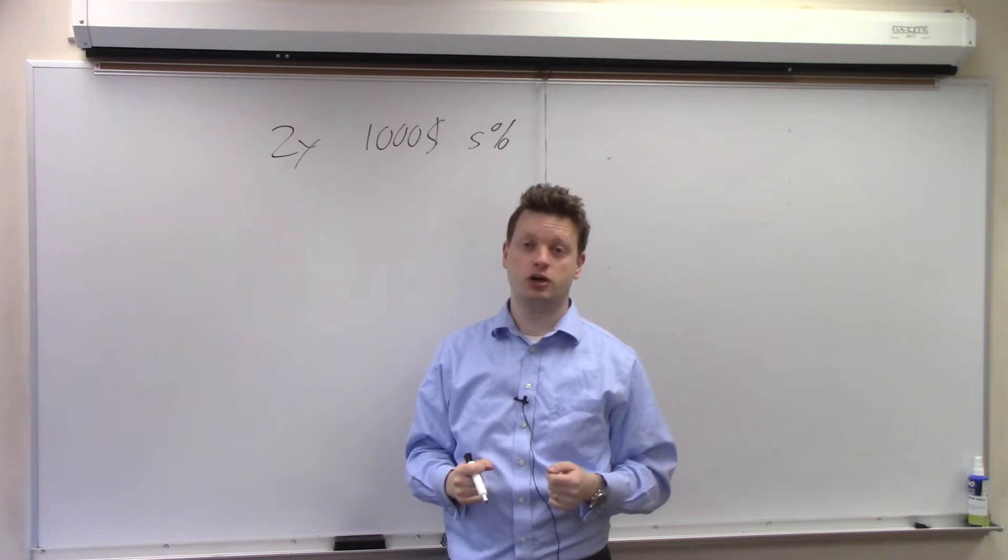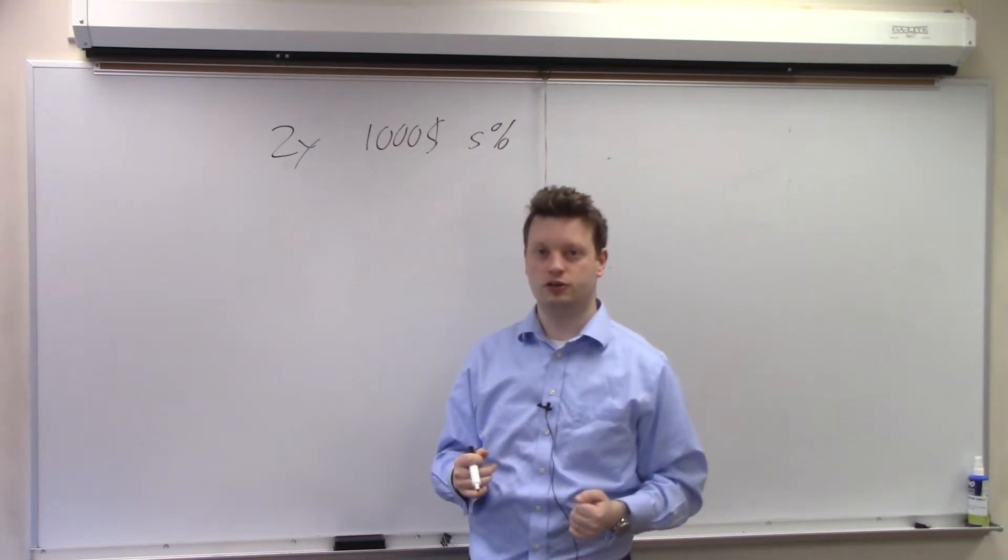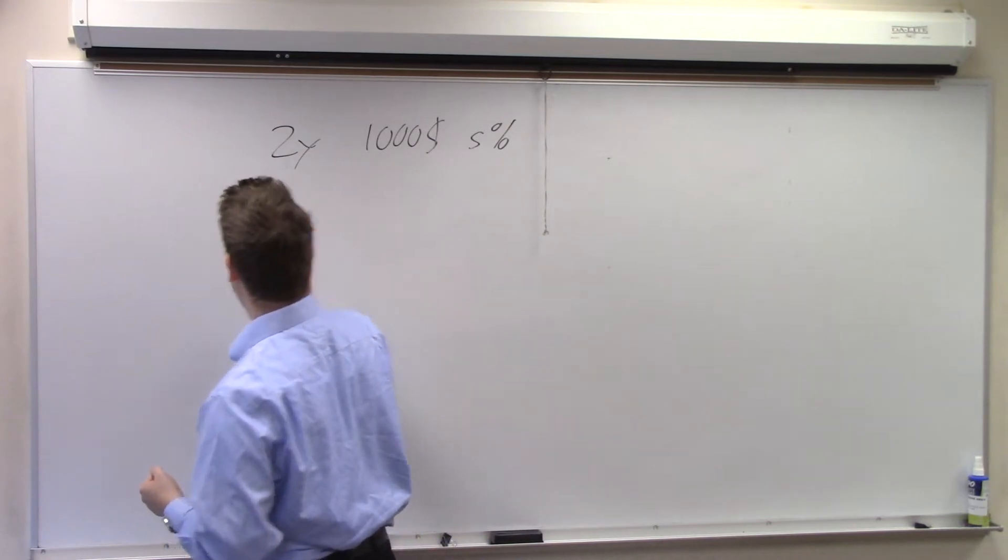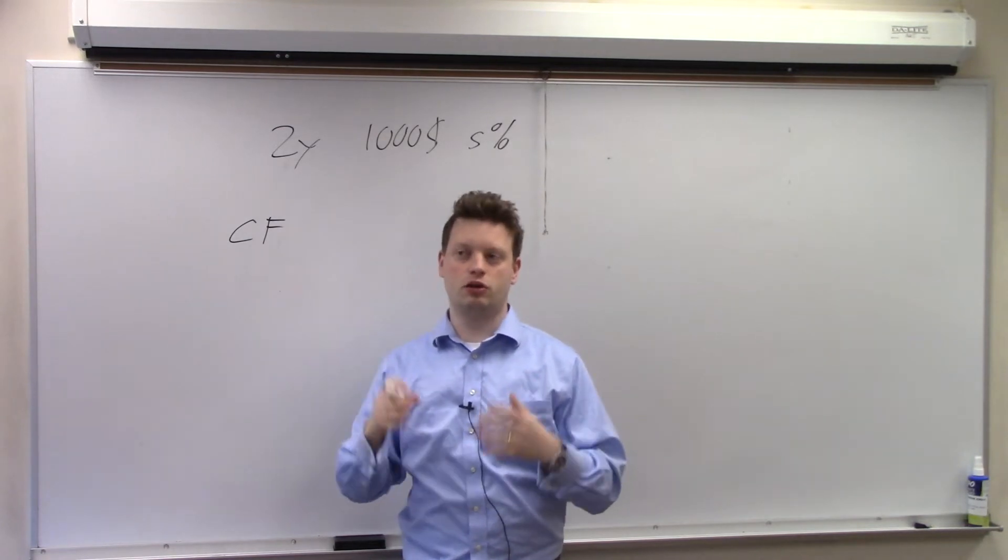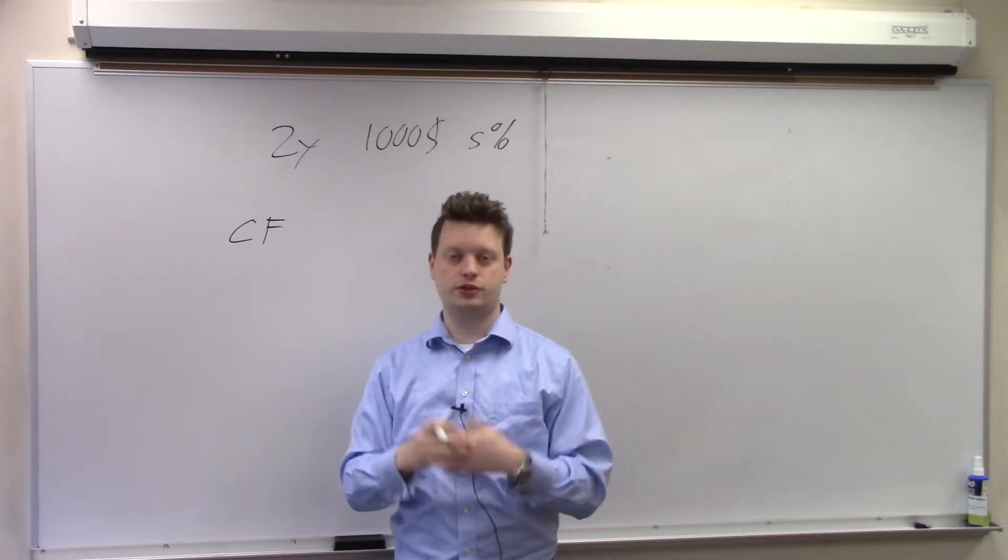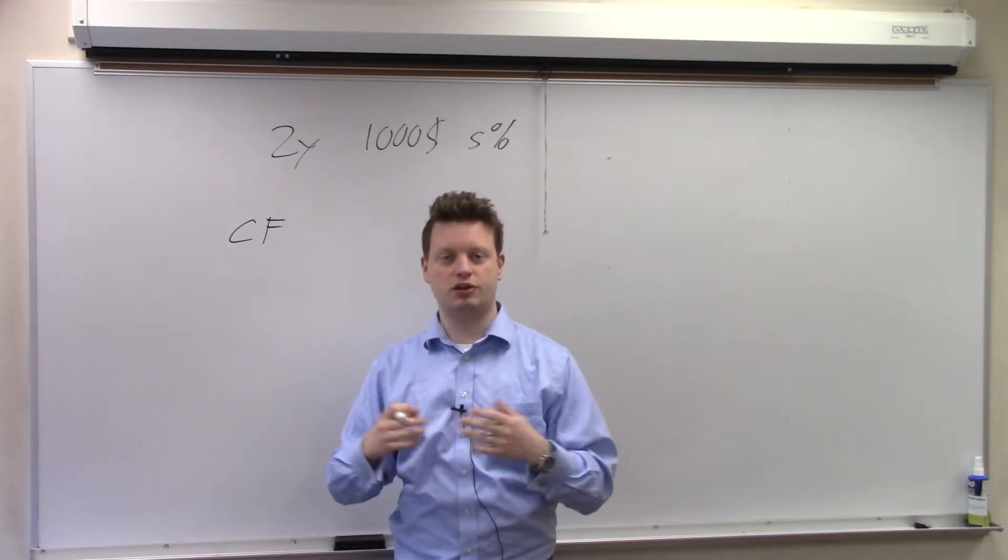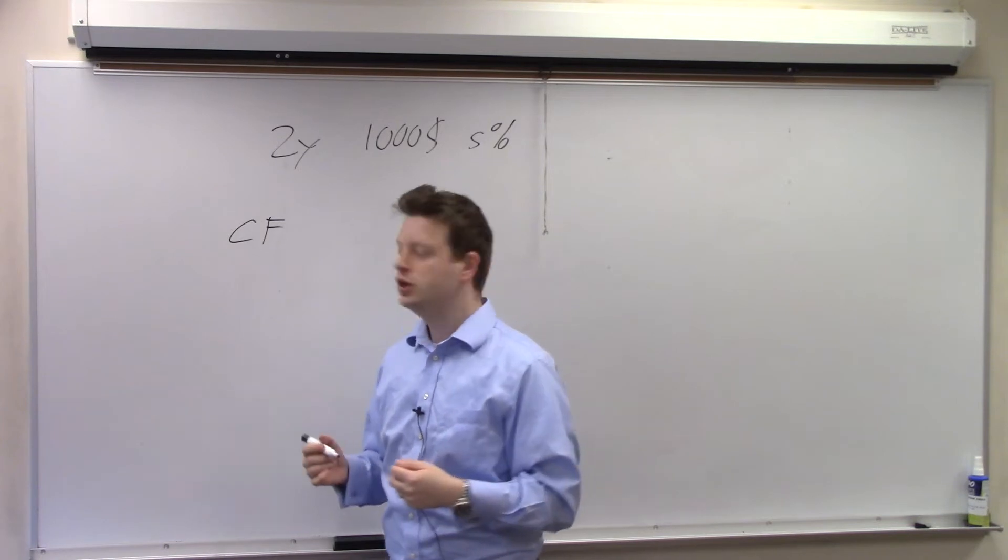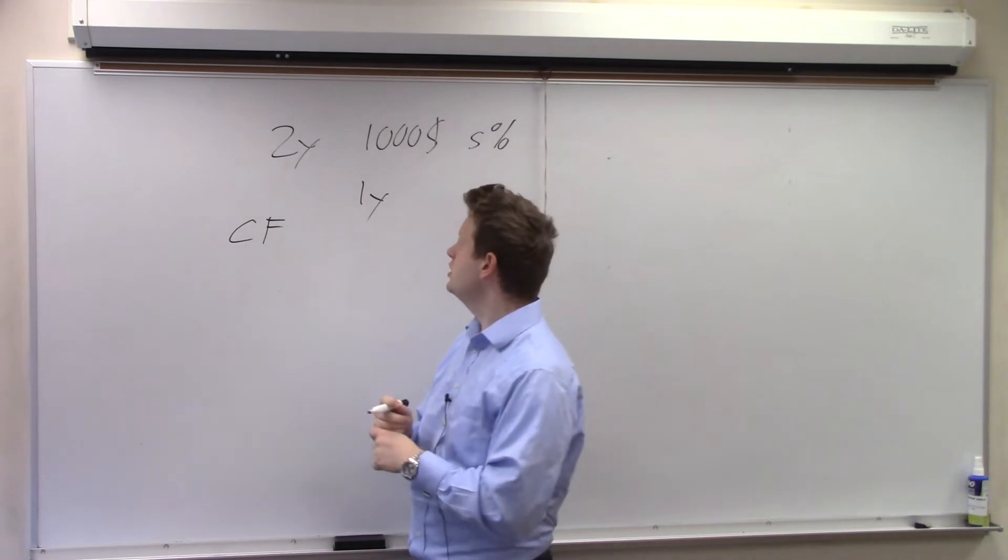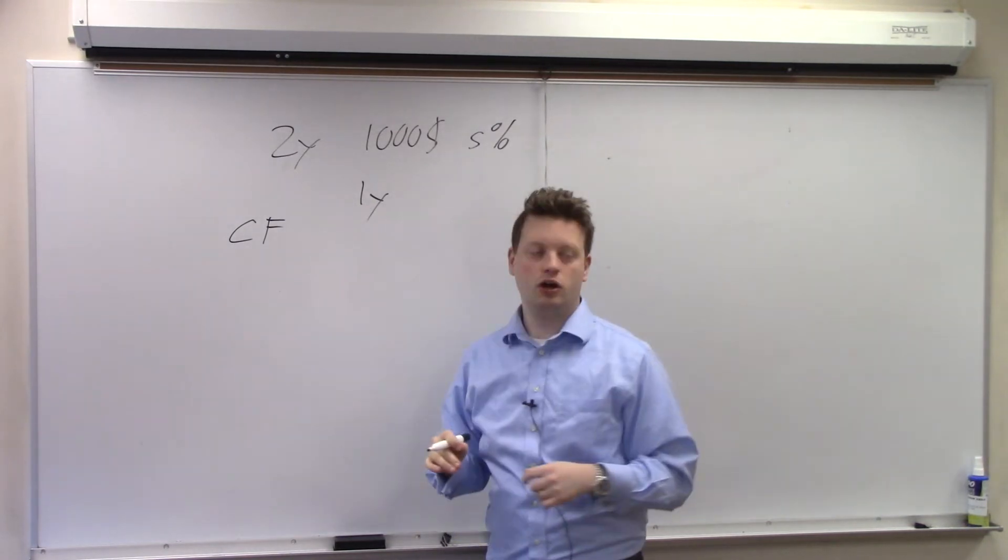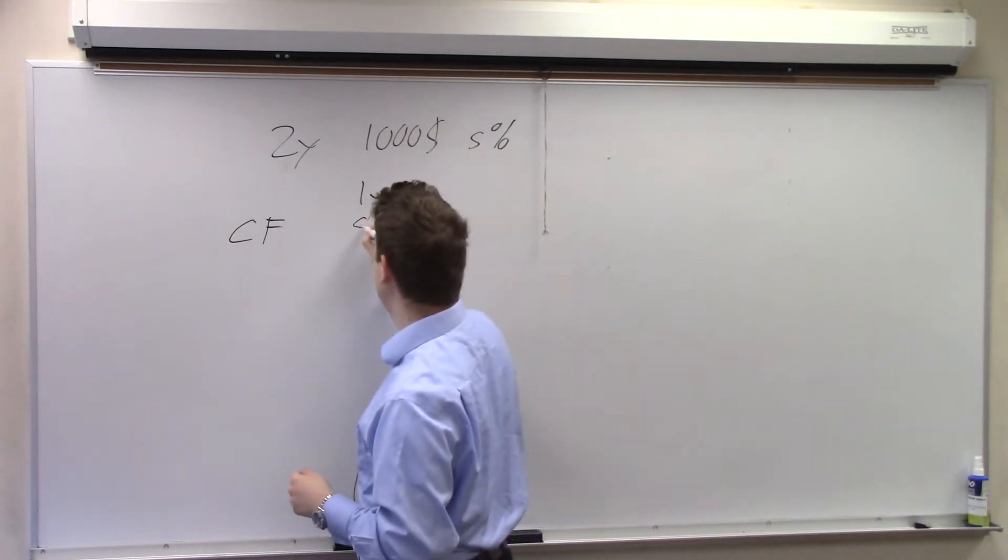To find the value of this bond we need to first find the cash flow of this bond. So the cash flow means what's the amount of money I get from having this bond. So first I buy this bond and then after a year I will receive my first coupon payment or interest payment. So after year one I receive the interest on this bond which is 5%. So 5% of $1,000 is $50.